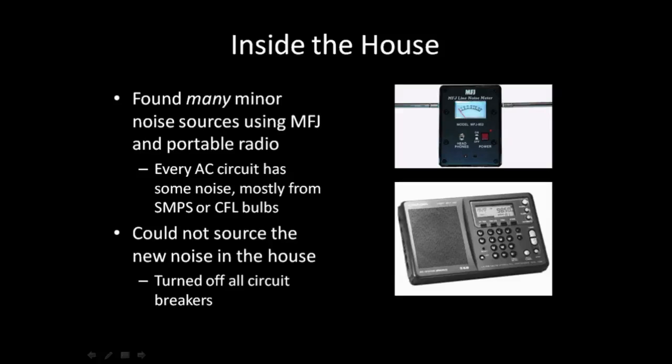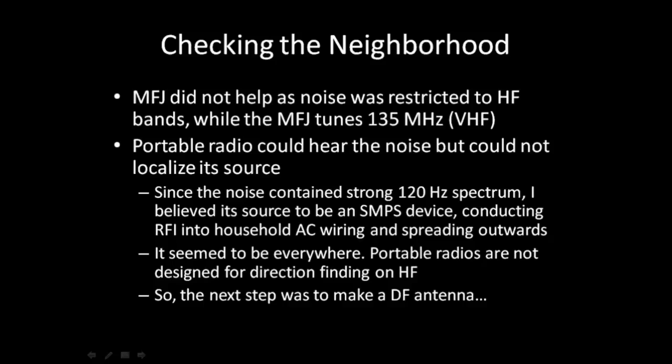After eliminating the power line and eliminating my own house, it was time to check the neighborhood. The MFJ didn't help a lot because my noise was in the HF bands while the MFJ is VHF. The portable radio could hear a lot of noise but couldn't localize its source. It's almost like the noise was getting into house wiring through conduction from whatever device was causing it and then just spreading outwards — the noise seemed to be coming from everywhere. So it was time to build a direction-finding antenna.